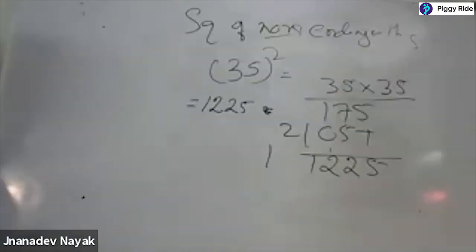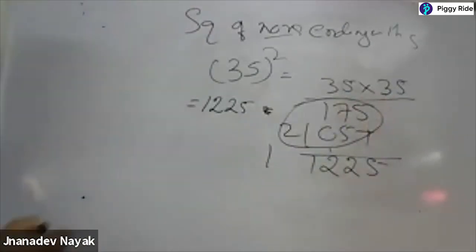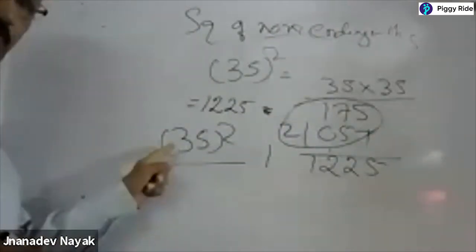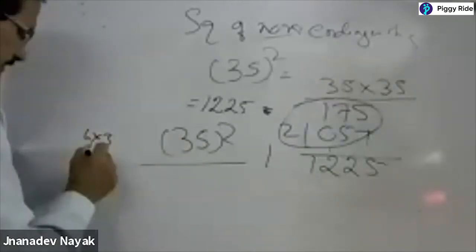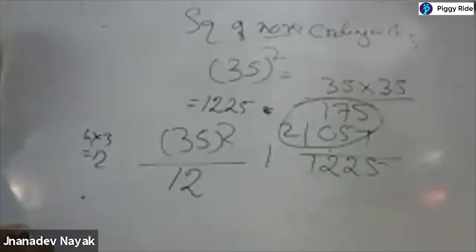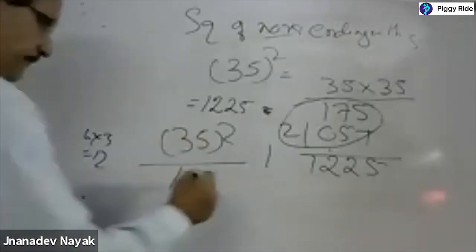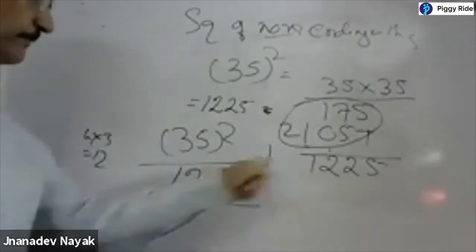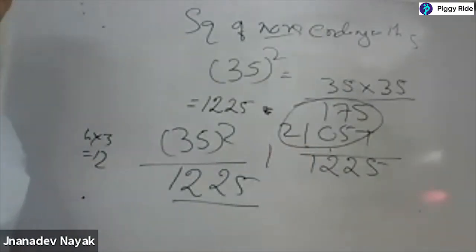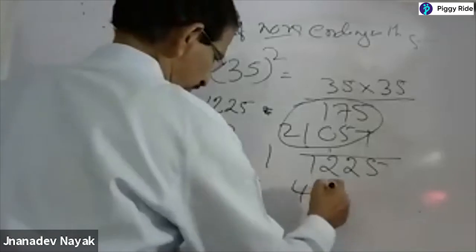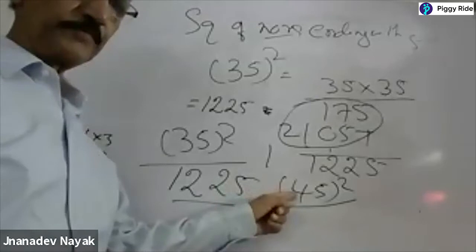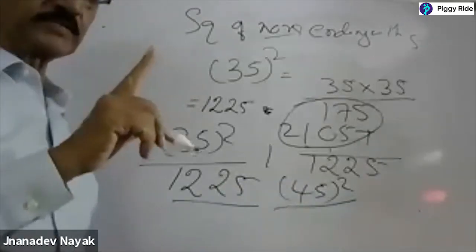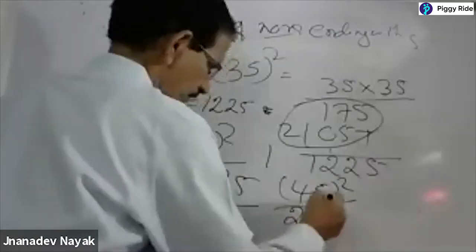But in Vedic Math, we will not do all these calculations — directly we will write the answer. Take the first digit 3, add 1 to it: 3 plus 1 equals 4. Multiply 4 by the original first number 3: 4 into 3 equals 12. Write 12. And square the last number 5: 5 fives are 25. So the answer is 1225. Suppose if you want to square 45 — what is the first number? 4. Add one to that: 5. 5 into 4 equals 20. Write 25 at the end. Answer is 2025.